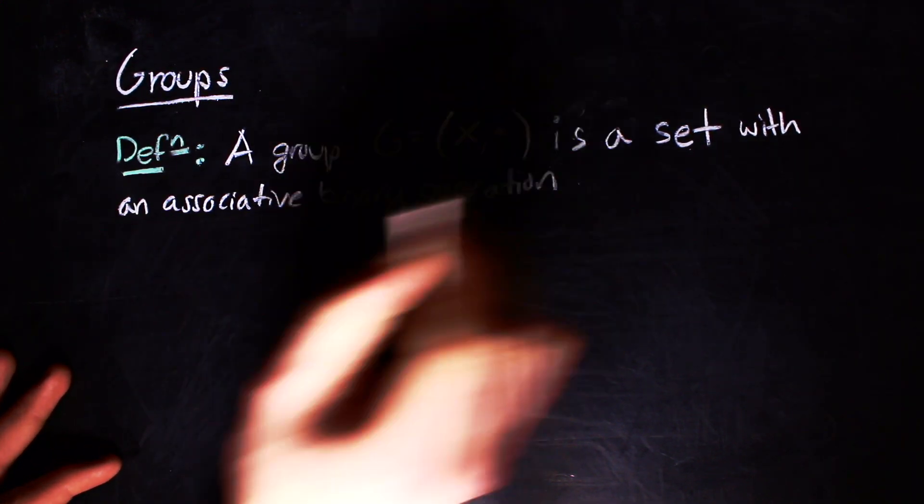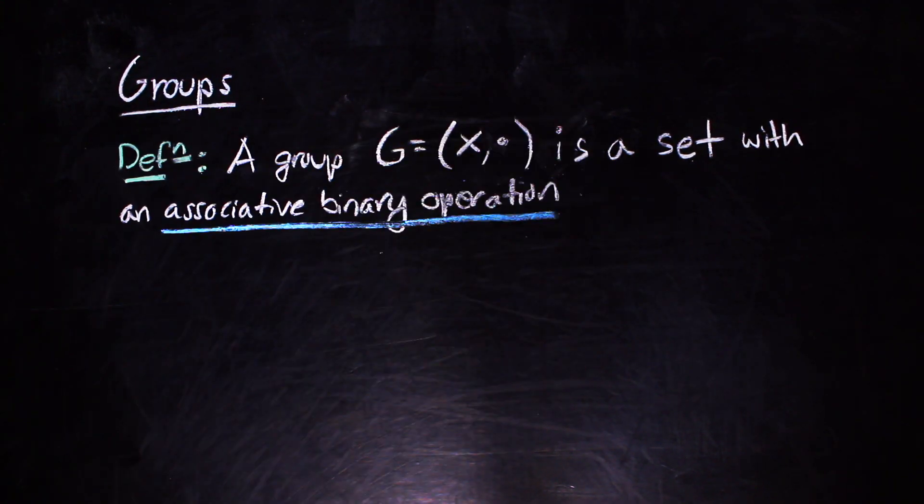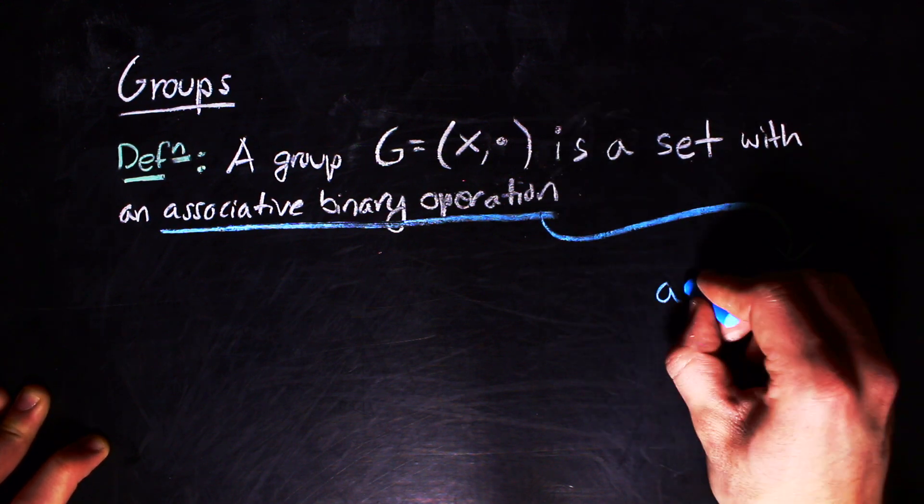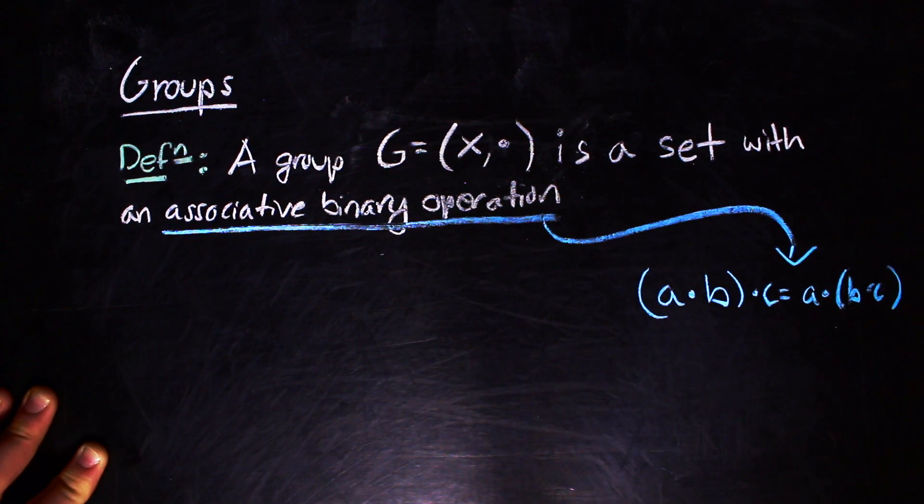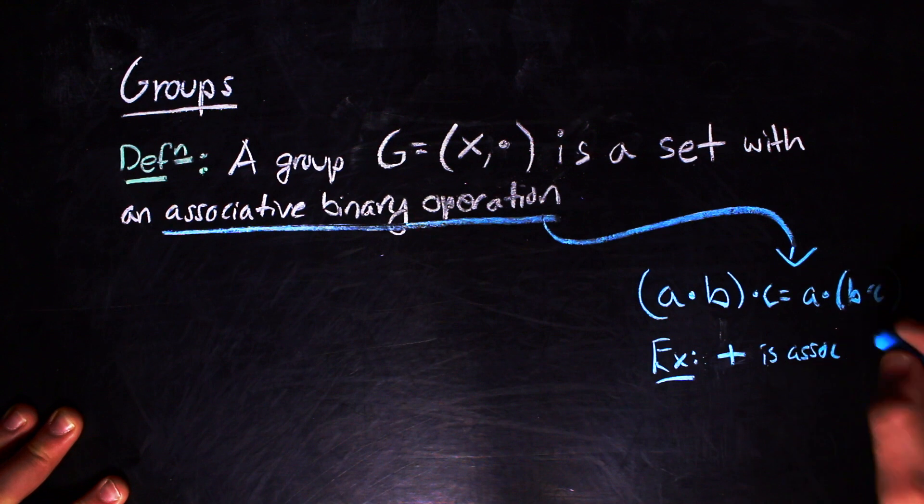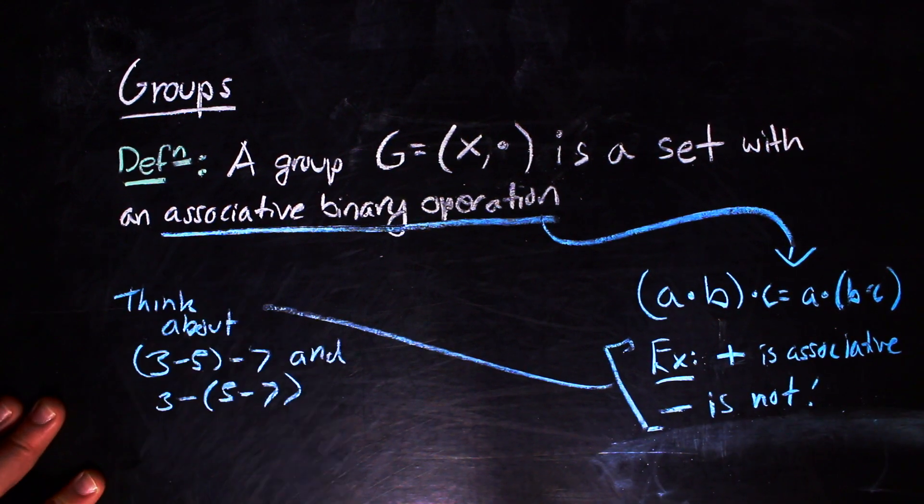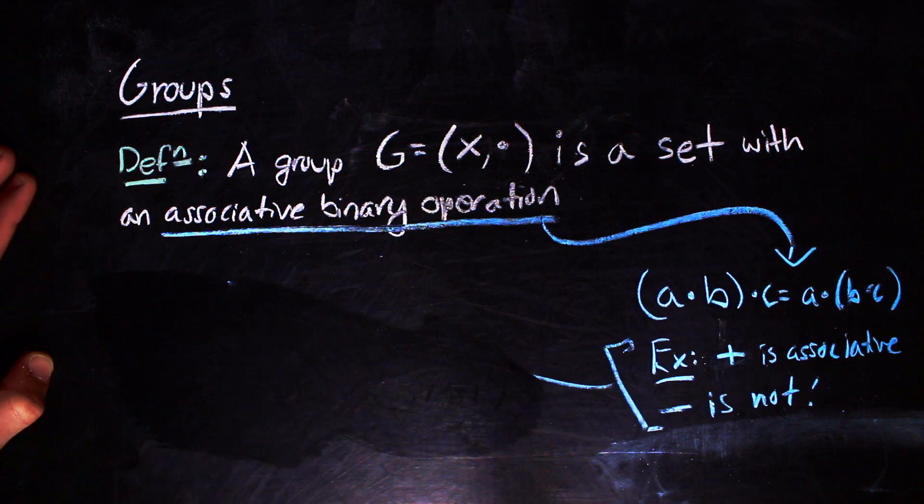The group operation is an associative binary operation. That is, a composition where grouping in multiple instances of the operation doesn't matter. So addition is associative and subtraction is not. A group also satisfies the following properties.